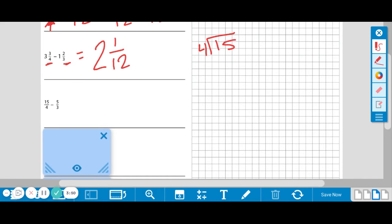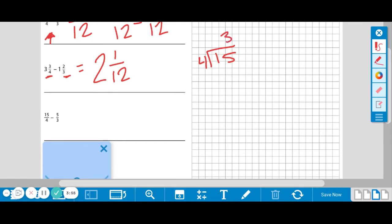So 4 will go into 15 three times. 3 times 4 is 12. Subtract those to get a remainder. How we represent that remainder is we put it over that denominator. So this new number is 3 and 3 fourths minus—now we're going to do the same thing to 5 thirds. You're going to take 5, which is the numerator, divided by 3, which is the denominator. 3 will go into 5 one time. 1 times 3 is 3. Subtract those to get a remainder of 2.